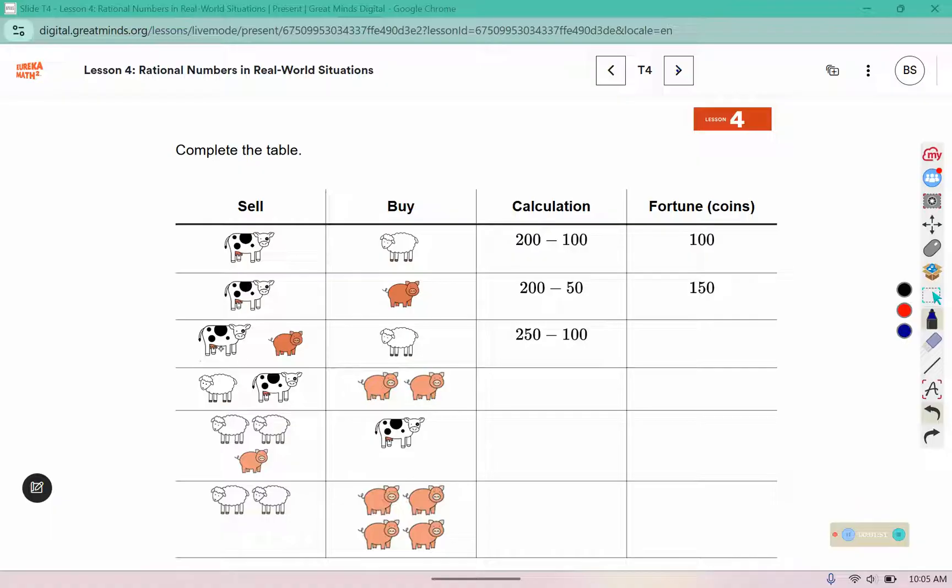Here we had the cow for 200, and the pig for 50, giving us 250, and they buy the sheep for 100. 250 minus 100 is 150.